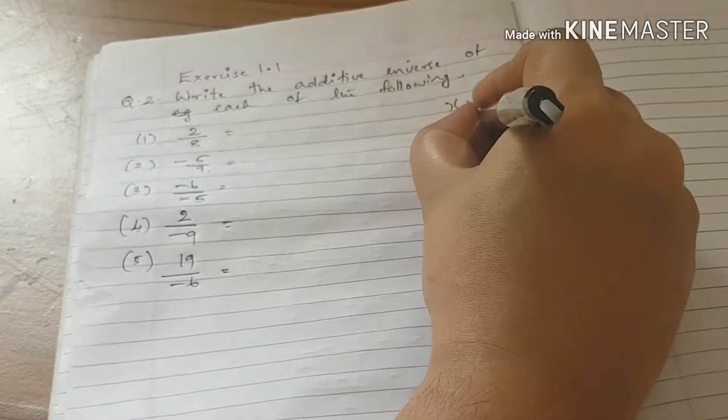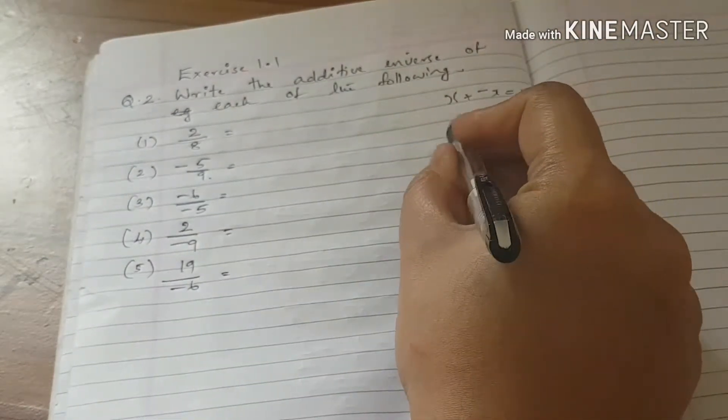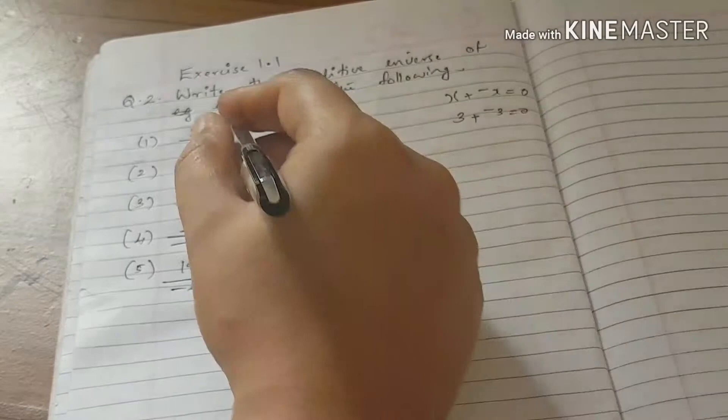The additive inverse is when you add any number and it equals 0. That is the additive inverse. This problem is that.